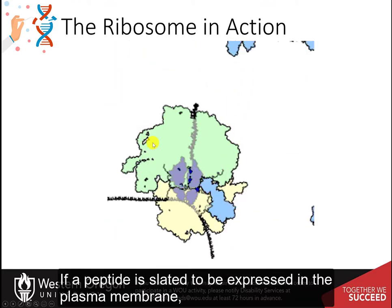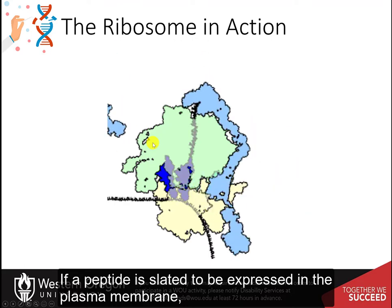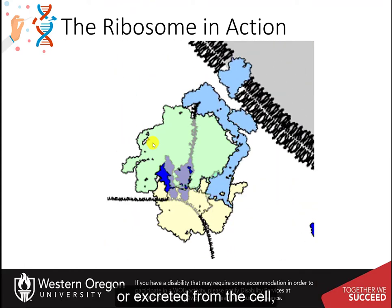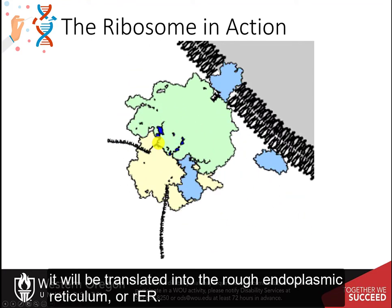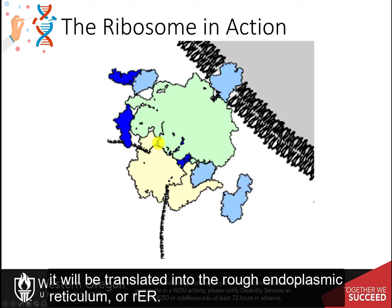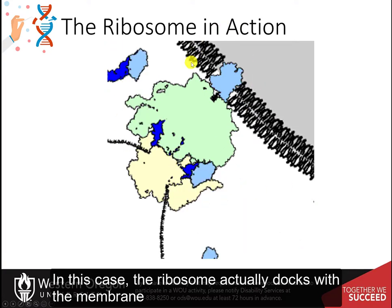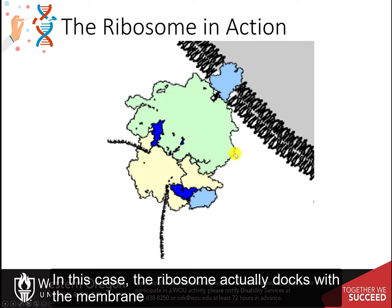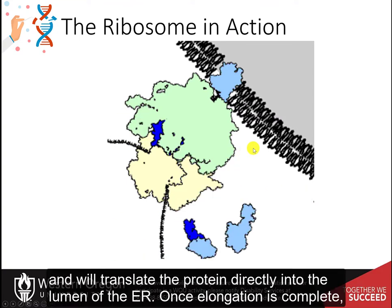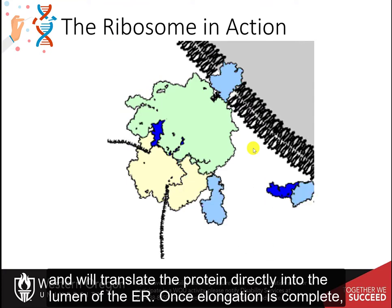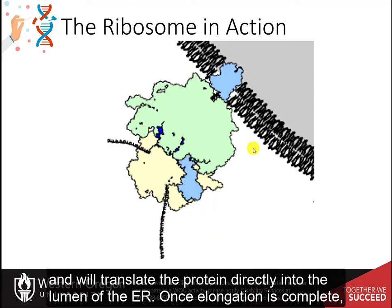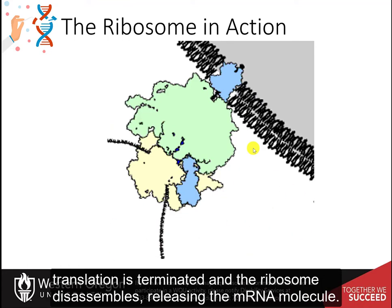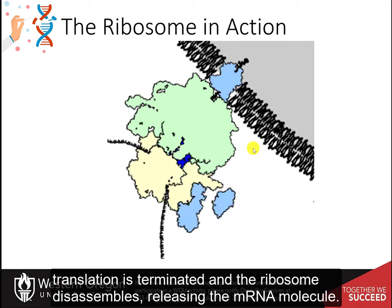Elongation is the next phase, where the ribosome actively translates the messenger RNA into the nascent peptide. If a peptide is slated to be expressed in the plasma membrane or excreted from the cell, it will be translated into the rough endoplasmic reticulum or RER. In this case, the ribosome docks with the membrane of the rough ER and translates the protein directly into the lumen of the ER. Once elongation is complete, translation is terminated, and the ribosome disassembles, releasing the messenger RNA molecule.